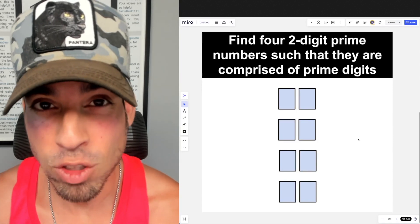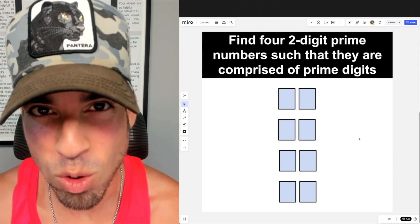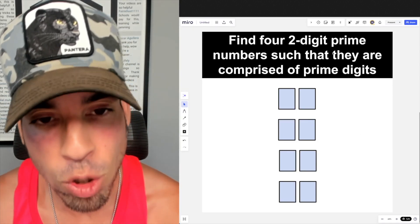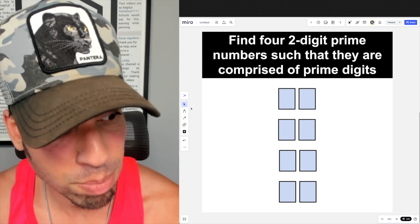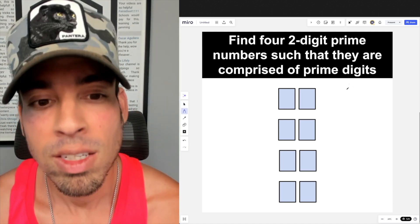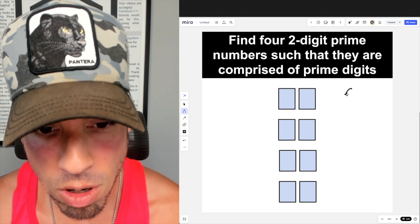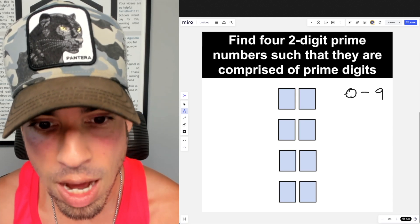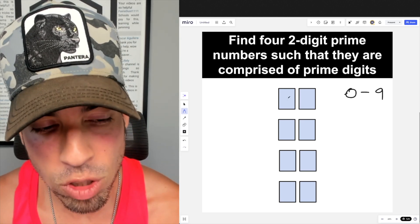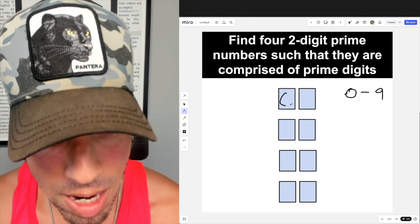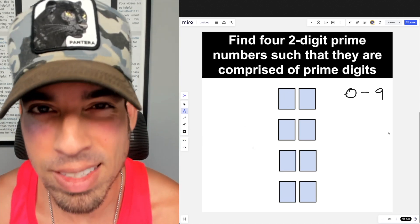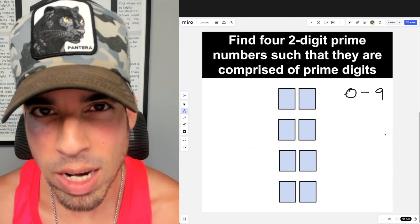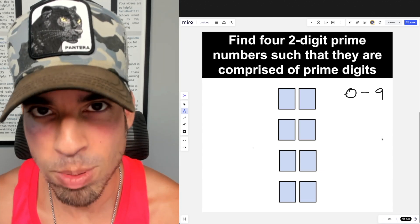What's up everybody and welcome back to another math puzzle. In this one, the question is as follows: find four two-digit prime numbers such that they are comprised of prime digits. So again, digits are any values from zero through nine. Now when we say two-digit, we're assuming that the leading digit does not start with zero, so it's one or above. Hit that pause button and see if you can figure it out. When you're ready, hit play and I'll give you the explanation.